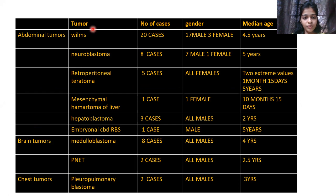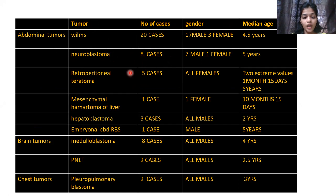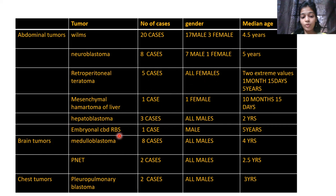Under abdominal tumours, we got 20 cases of Wilms tumour, of which 17 children were male and 3 were female. There were 8 cases of neuroblastoma where 7 were male and 1 was female. There were 5 cases of retroperitoneal teratoma, all females. One case of mesenchymal hamartoma of the liver was seen in a female. There were 3 cases of hepatoblastoma, all males, and 1 case of embryonal rhabdomyosarcoma of the CBD in a male.